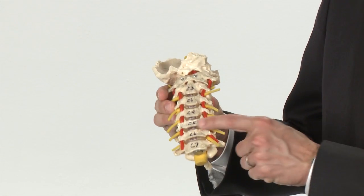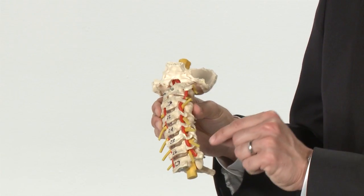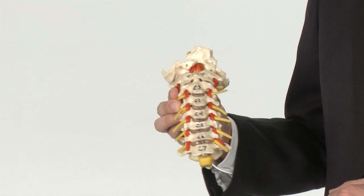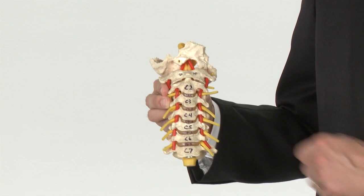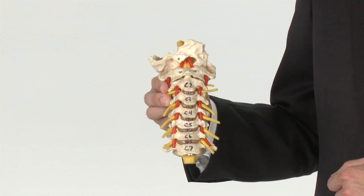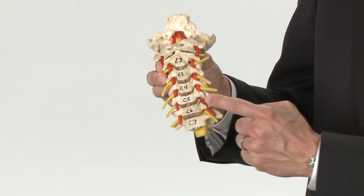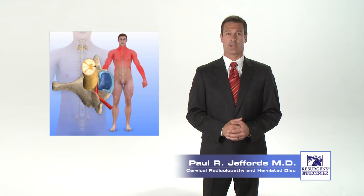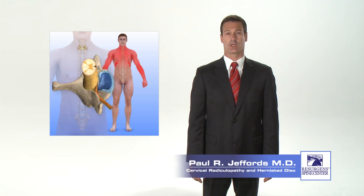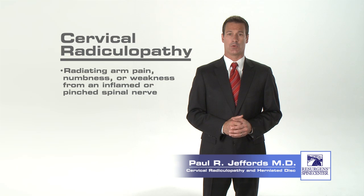Running through the spinal canal is the spinal cord. At each disc level, a pair of nerves exits from the spinal canal, one on each side, and they branch off the spinal cord and radiate down the arms to supply the muscles, joints, and skin throughout the arms and hands. Sometimes the spinal nerves are called nerve roots because they look like roots branching off of a tree trunk. The spinal nerves exit through tunnels called foramen, bordered by the disc in front and the facet joints in the back. Because these nerves radiate all the way down to the hands, irritation or pinching of these spinal nerves can result in pain or numbness that radiates down into the arms and hands. These arm symptoms are technically known as radiculopathy.